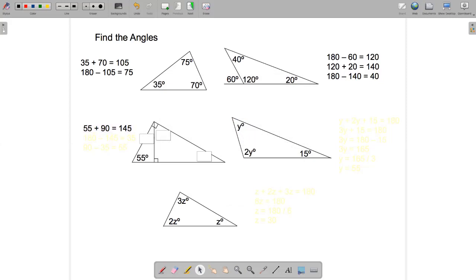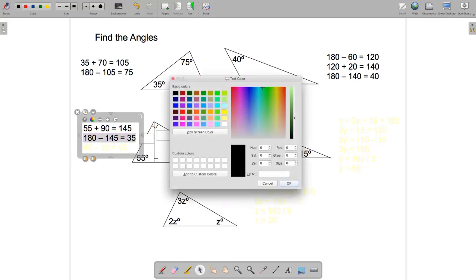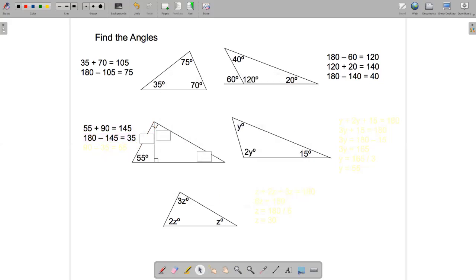So then the angle at the top, this angle here must be 180 minus 145, which comes to 35 degrees. So this angle is 35 degrees. And then up here, this angle.